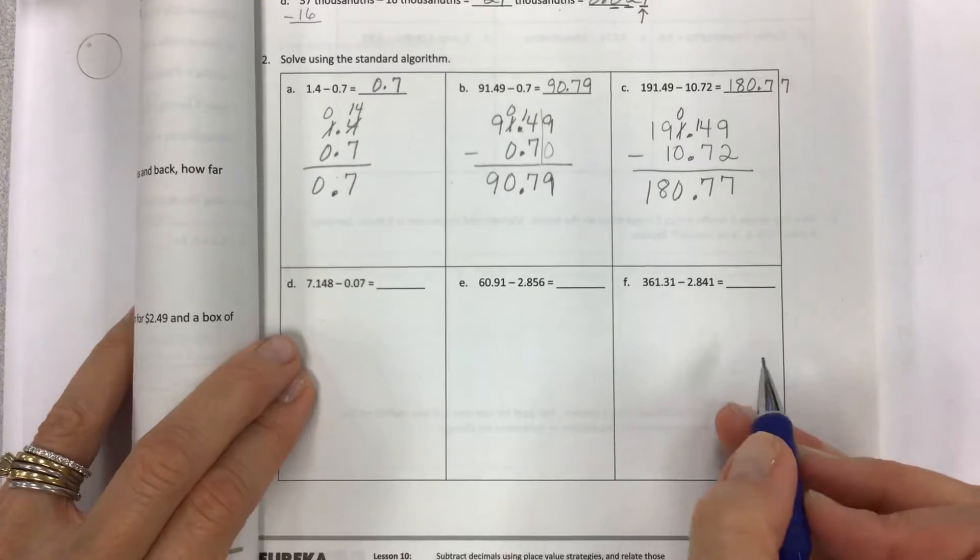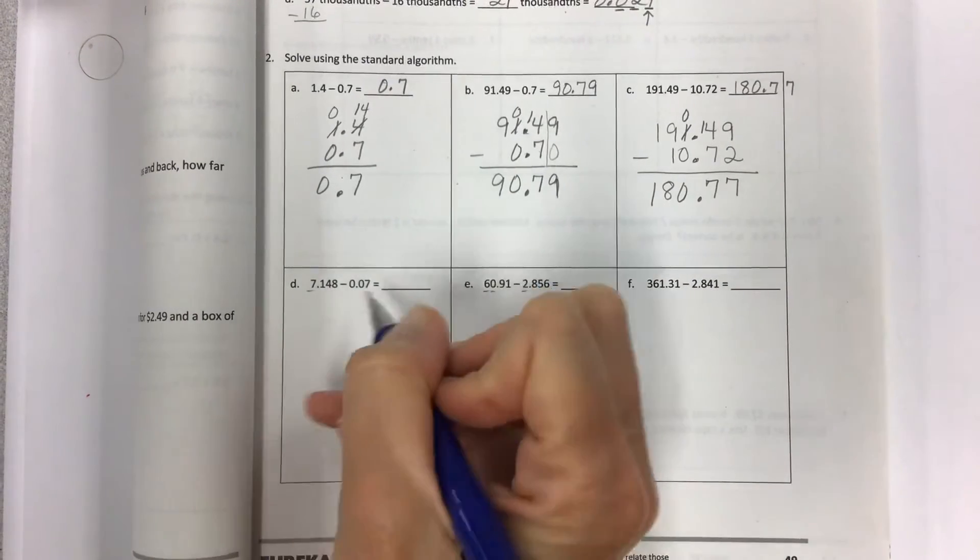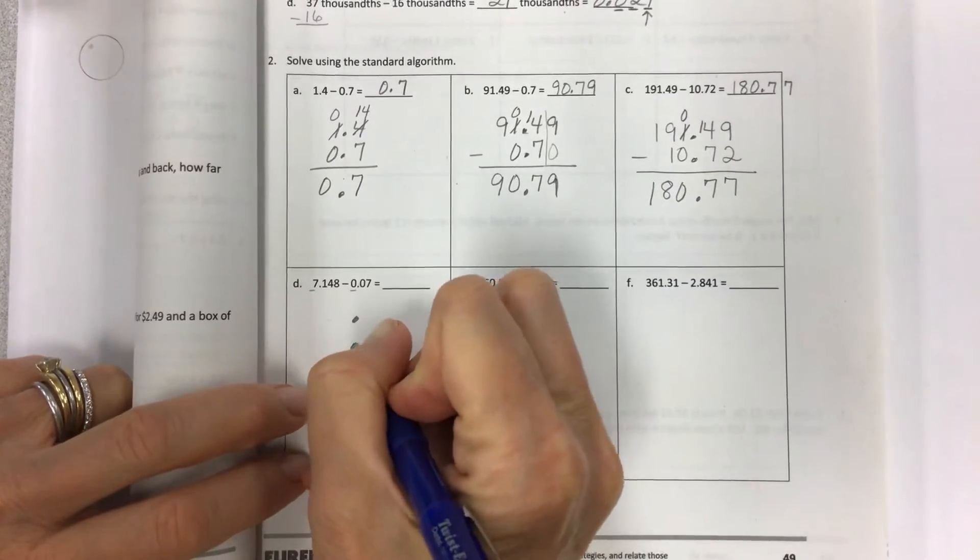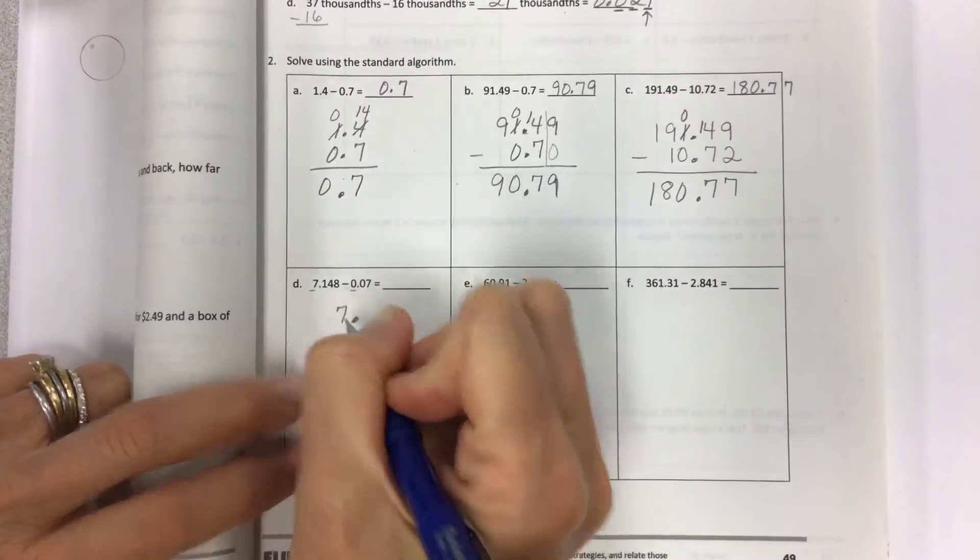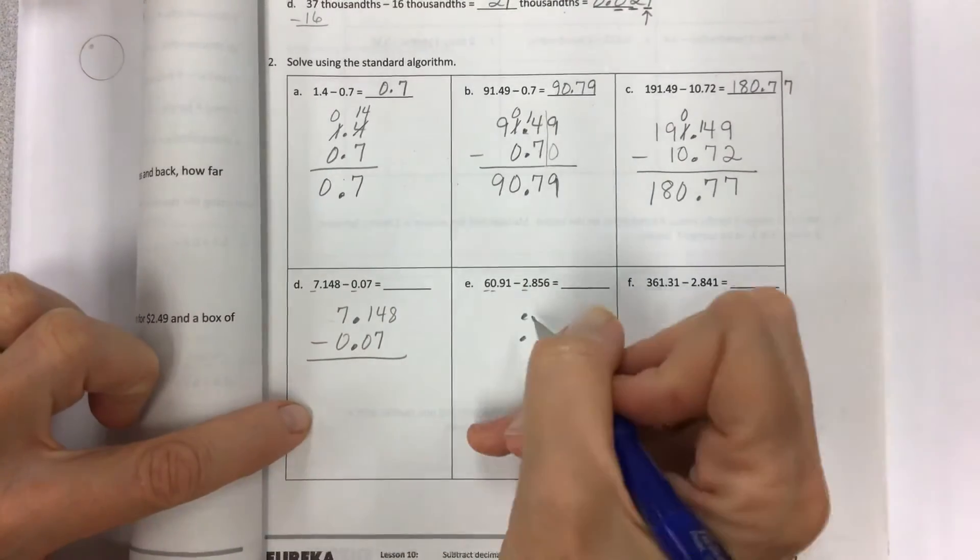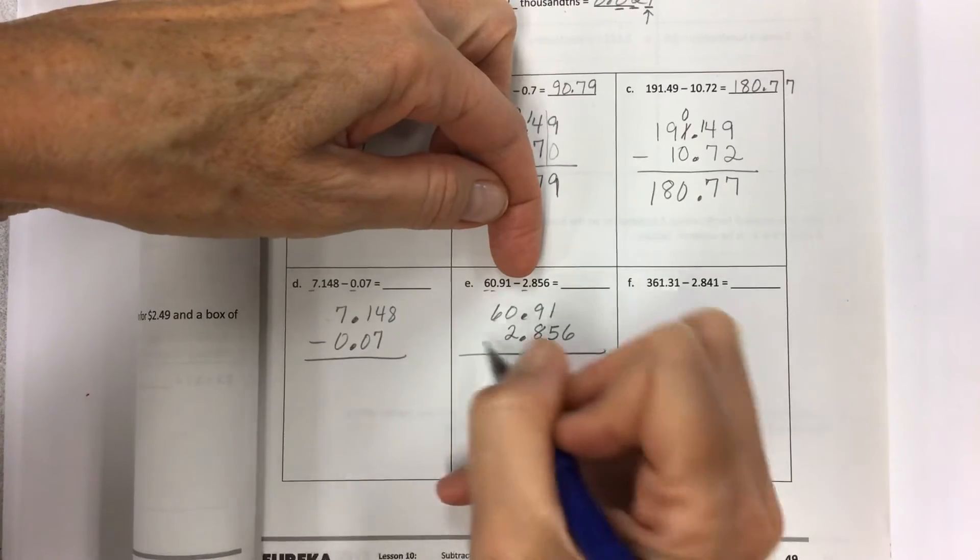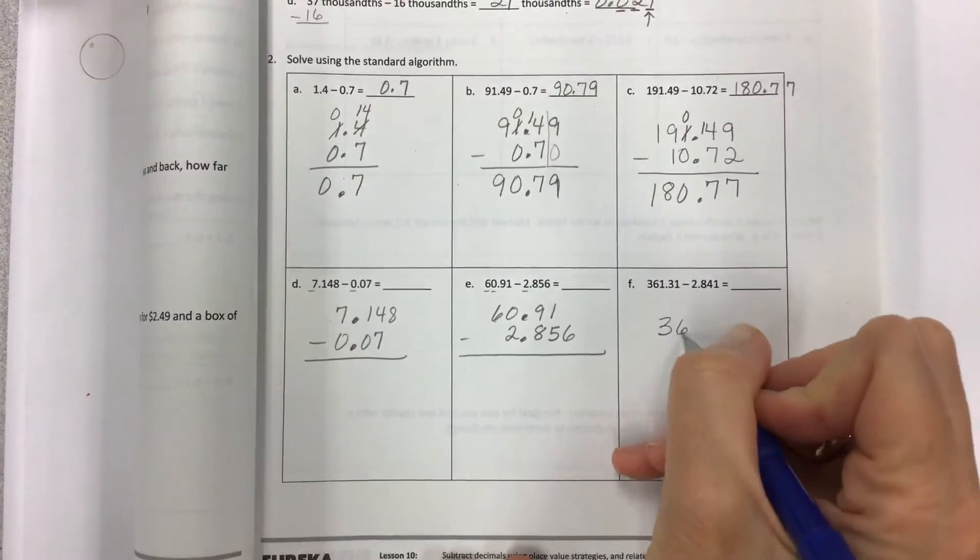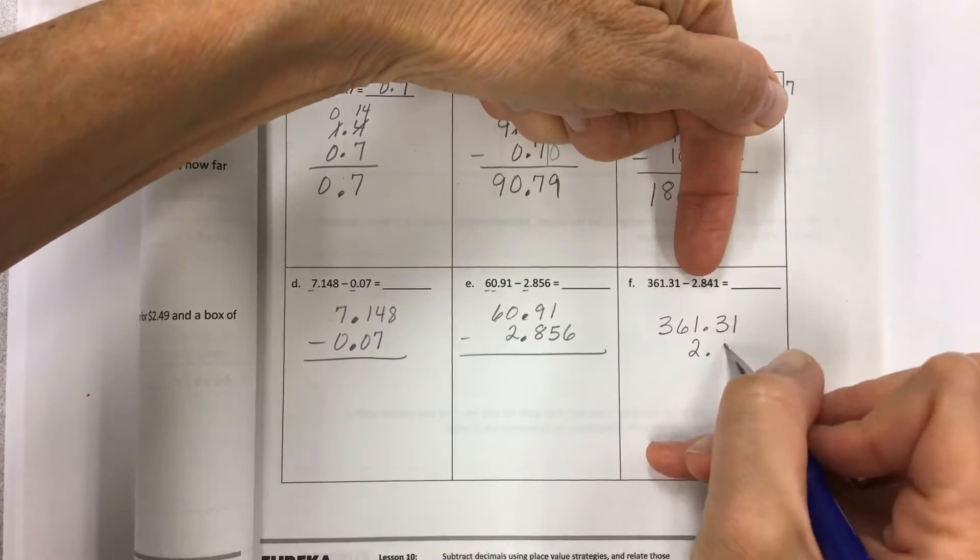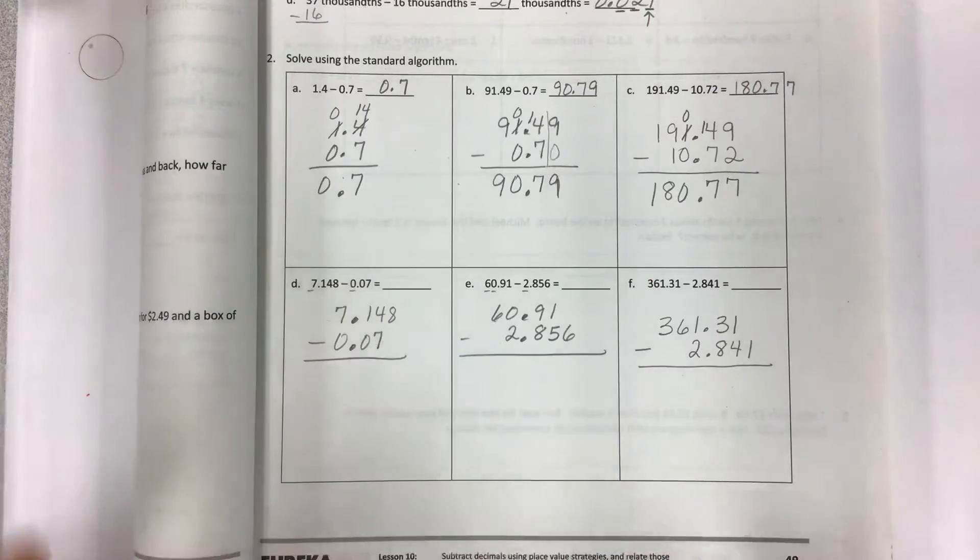So this is all the same. But watch out. Look at two digits to the left, one digit to the left, one and then zero. But three digits first and two digits that come after that. It's all about lining it up. Just put the decimals in first, would you? It will really help you out. 7.148 minus 0.077. Set it up like that. 60.91 minus 2.856. Set it up like that. 361.31 minus 2.841. If you line these up like this, then the only thing that's left is the subtraction.